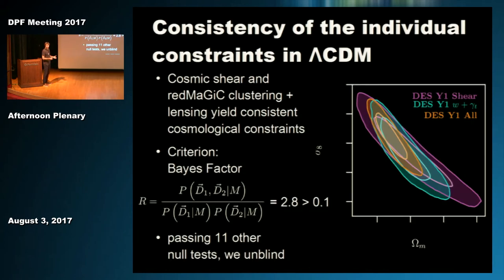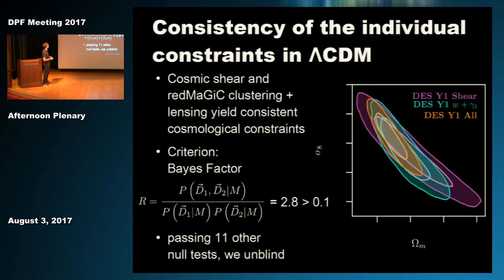Before combining these two ways of probing the matter field, we first need to make sure they give consistent results—otherwise combining them makes no sense. We look at the cosmological results from galaxy clustering and galaxy-galaxy lensing separately and find they appear in very similar positions in parameter space. The criterion we use to decide consistency is the Bayes factor, which in this case tells us that these two experiments seem to measure the same underlying cosmology. Passing this test and 11 other tests before unblinding, we can finally look at our cosmological results.